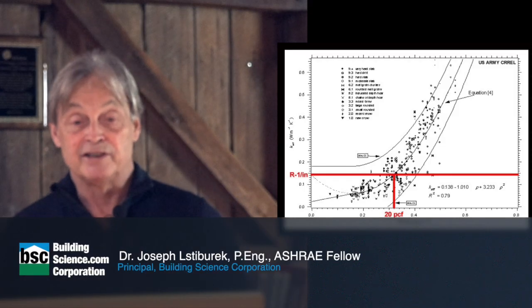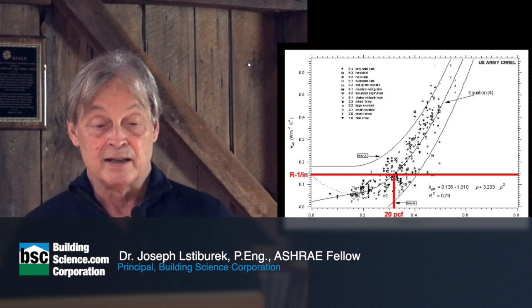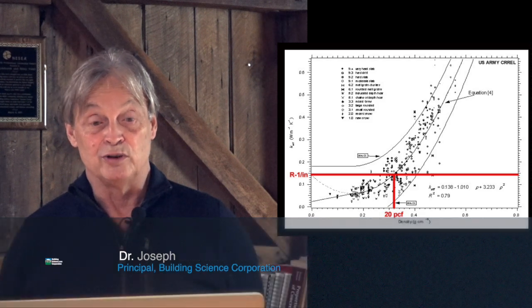Anyway, this is the R value of snow, and the R value of snow based on density is between R1 and R2 per inch.